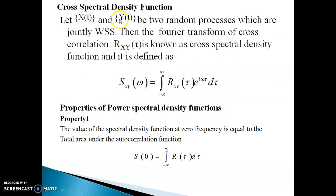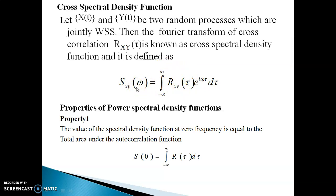Similarly, for defining the cross spectral density function, you consider two random processes x(t) and y(t) which are jointly WSS with the cross-correlation function Rxy(τ). Then the Fourier transform of Rxy(τ) is known as the cross spectral density function.